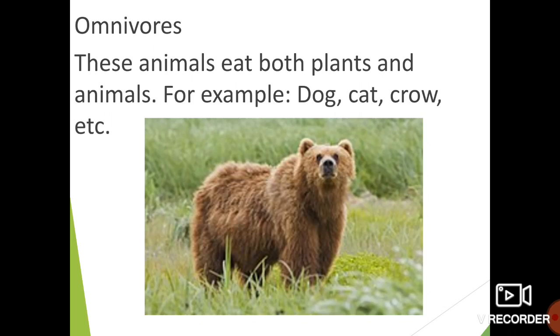The next type of animals are omnivorous. These animals eat both plants and animals. For example, dog, cat, crow, etc. are omnivorous animals.